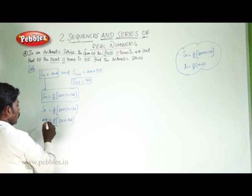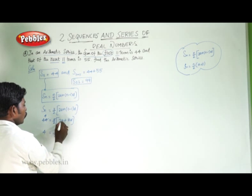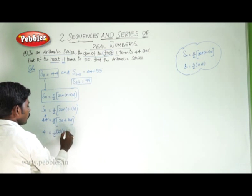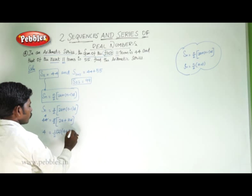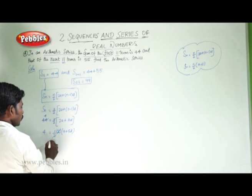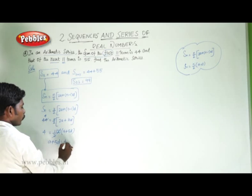Simplifying: 44 divided by 11 gives 4 is equal to 1 by 2 into 2a plus 10d. Since 2 is common and cancels, we get a plus 5d is equal to 4. This is the first equation.